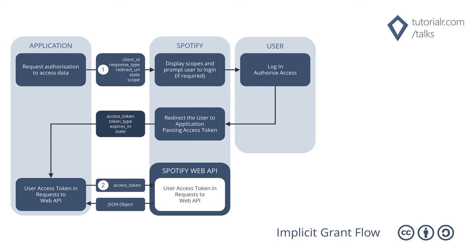Implicit grant flow is the best option for clients that are implemented entirely on the client side, such as a browser. However, there are no refresh tokens provided. First, have your application request authorization where the user logs in and authorizes access. Then the access token will be returned as a hash fragment in the redirect URI, and use the access token to access the Spotify API.